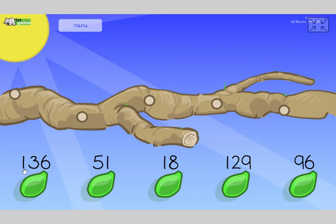Okay, so here we've got 136. Here we've got 51. Here we've got 18. Here we've got 129 and 96. Okay, which is the smallest of those numbers? Yeah, this one's only got 1 ten, so, and that's less than all of them, so that can go first.